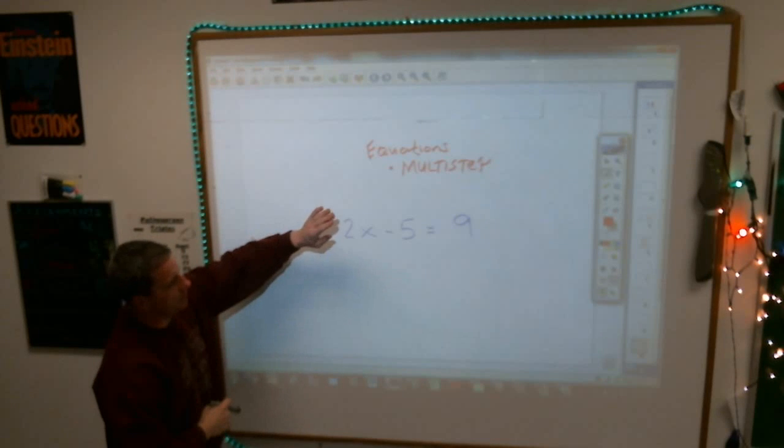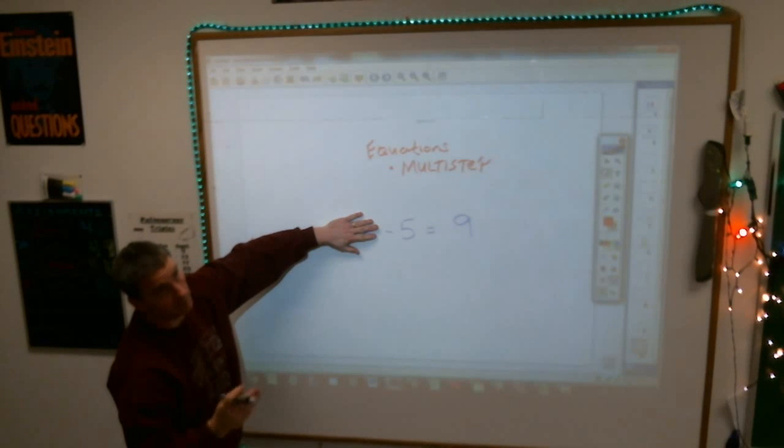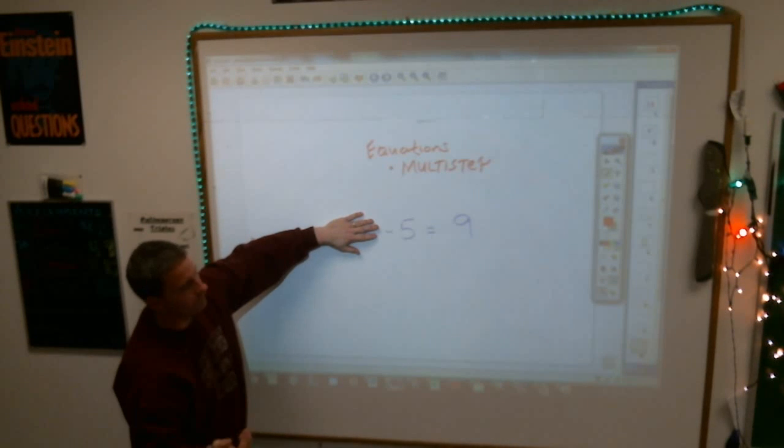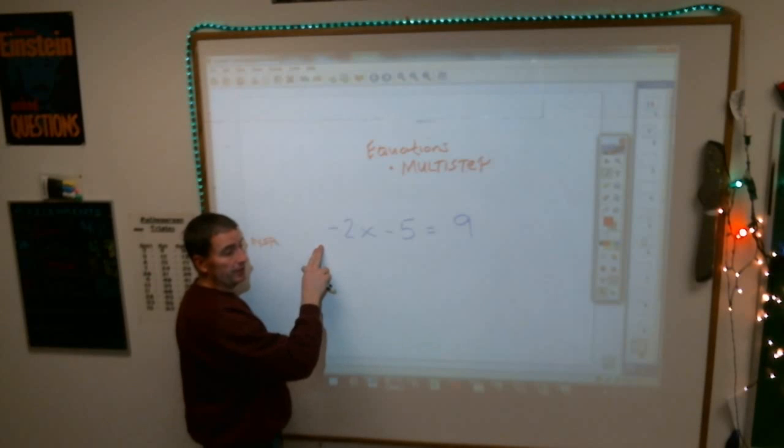I mean, you can look at this and go, okay, well, what number when I subtract 5 from, it gives me 9. So, what number when I subtract 5 from, it gives you 9? 14, and that, here's the next thing.